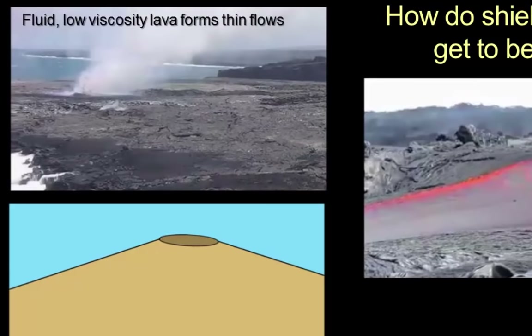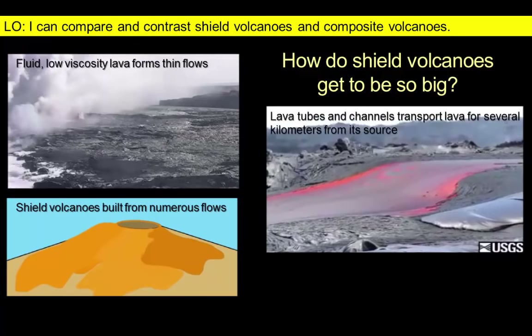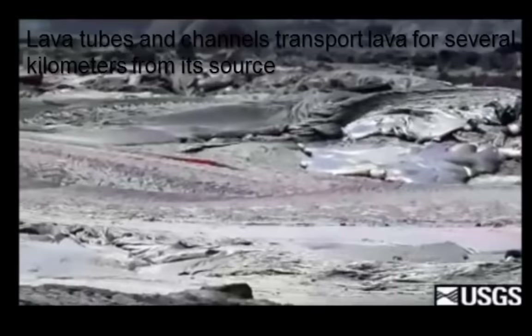These lava flows are thin and fluid and can flow easily. For example, let's take a few moments to watch this time-lapse video of lava emerging from fissures near the Hawaiian coast. Notice how thin each flow is. Lava from shield volcanoes can travel long distances along a series of lava tubes or channels that carry the hot lava tens of kilometers before it can cool off and solidify.